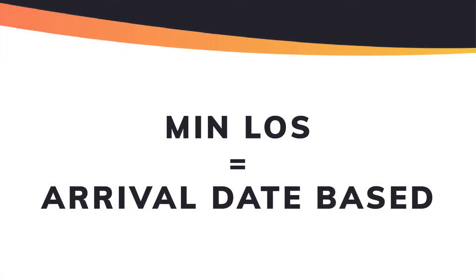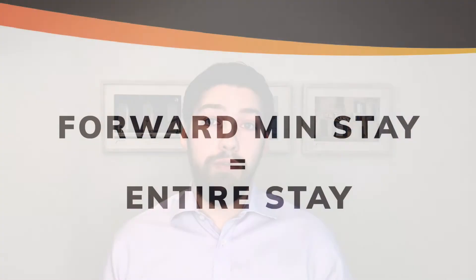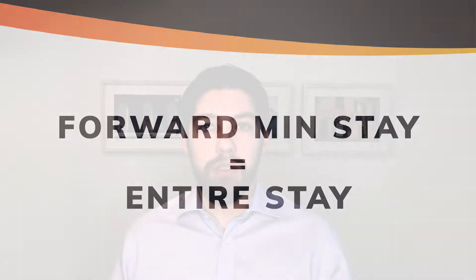The discussion really comes up because there are two distinct ways to interpret the length of stay restrictions. The first one is min LOS — it looks purely at the arrival date of the guest. The second one is the forward min stay, which looks at the entirety of the guest's stay. The big dilemma is that a lot of systems online use one of these parameters but they all call them length of stay restriction.